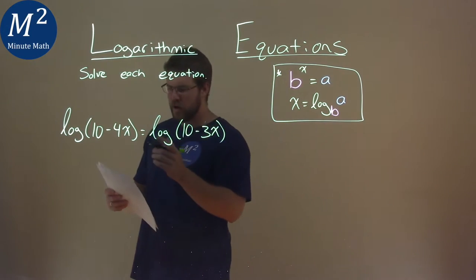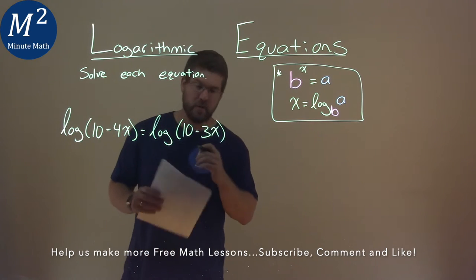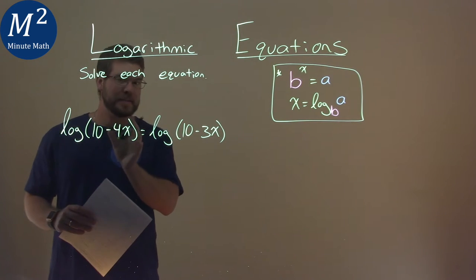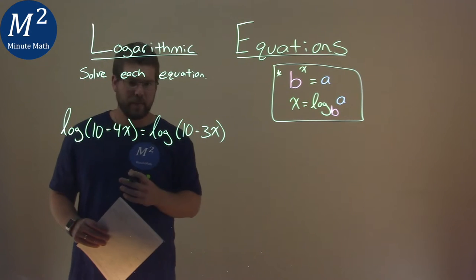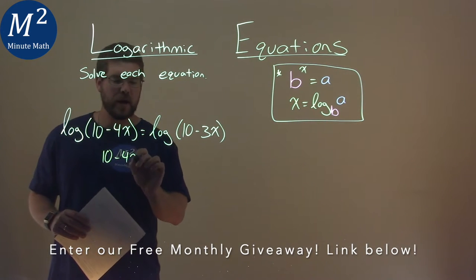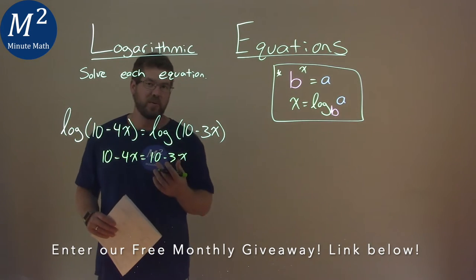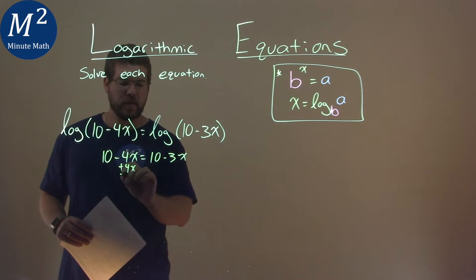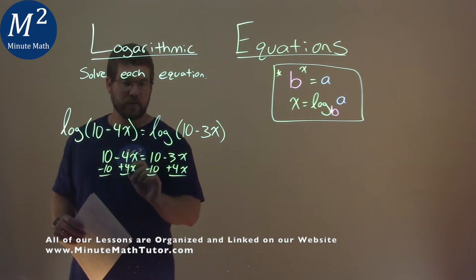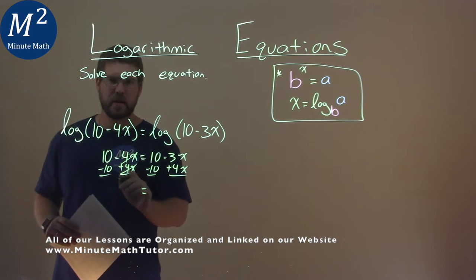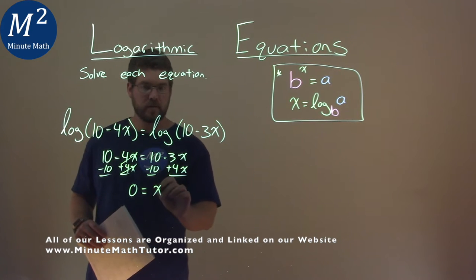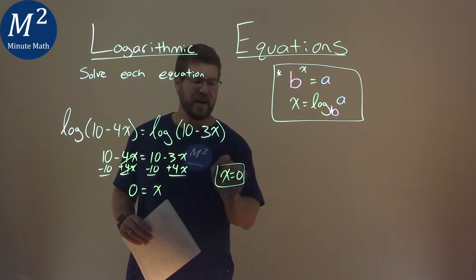We're given this problem: log of 10 minus 4x equals log of 10 minus 3x, and we need to solve this equation. We have log with the same base of 10. When that happens, we can take the inside parts and set them equal to each other. So we have 10 minus 4x equals 10 minus 3x. I add 4x to both sides and subtract 10 from both sides. Negative 4x plus 4x cancel, and 10 minus 10 is also 0. Negative 3x plus 4x is just 1x. My final answer is x equals 0.